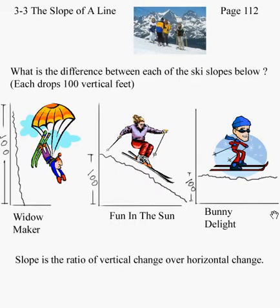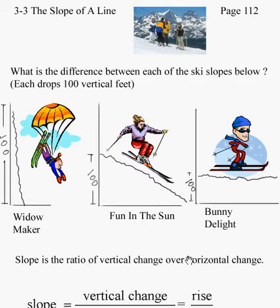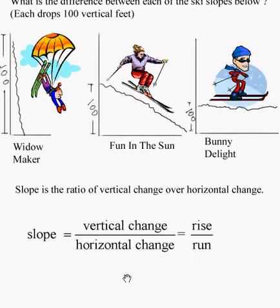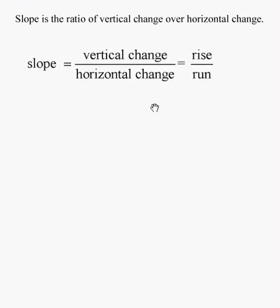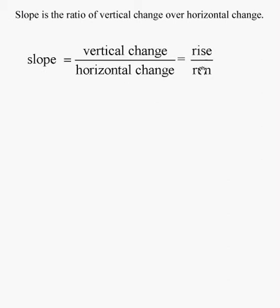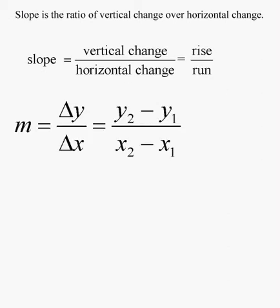So we can think of slope as a ratio. The amount of vertical change over the amount of horizontal change. In math, we might think of it as something like the rise over the run.